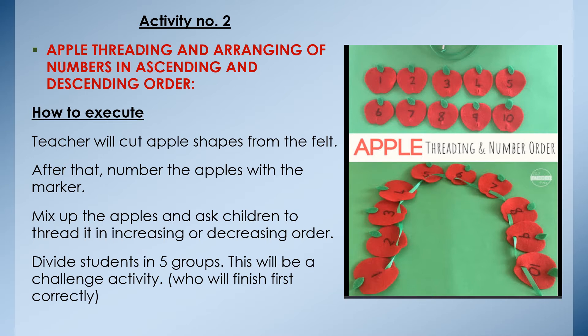Activity two: apple threading and arranging numbers in ascending and descending order. The teacher will cut apple shapes from felt, then number the apples with a marker, mix them up, and ask children to thread them in increasing or decreasing order. This will be a group activity — divide students into four or five groups depending on your class size.